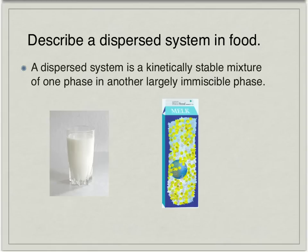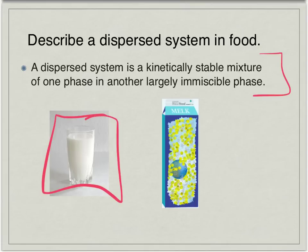So this is kind of fun — we're talking about textures and foods. First we want to talk about a dispersed system. A dispersed system, and this is an IB definition, is a chemically stable mixture of one phase in another largely immiscible phase. So we have two different things that are mixed together, and we can't tell that there are two different things there.